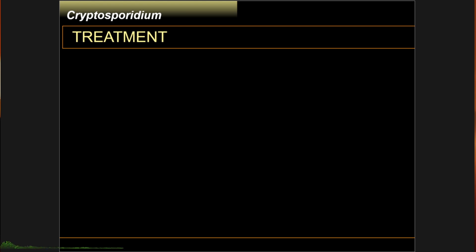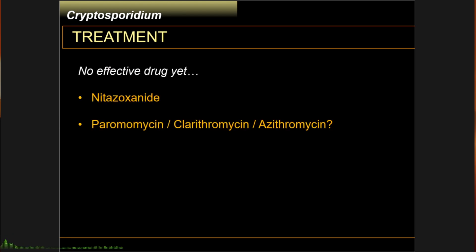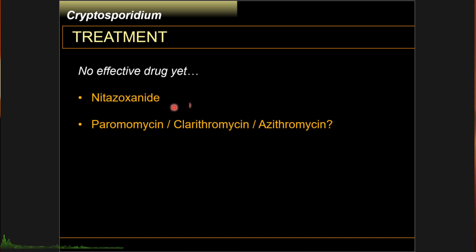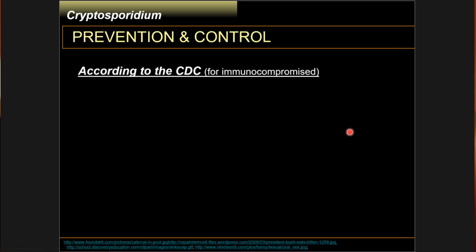As for treatment of Cryptosporidium, there is no effective drug yet, but these drugs have often been used in outbreaks with marginal success: nitazoxanide, paromomycin, clarithromycin, and erythromycin. The efficacy of these second-tier drugs is not well established, and it should also be noted that these drugs are only effective for immunocompetent individuals.